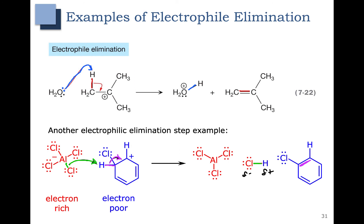As you go through the electrophile elimination reaction, make sure you can properly distinguish it from an E2 reaction, which uses a base, releases a leaving group, and forms a carbon-carbon double bond. You also want to distinguish it from a nucleophile elimination, where we form a carbon-oxygen or carbon-nitrogen double bond. In electrophile elimination we form a carbon-carbon double bond — that's how it differs from a nucleophile elimination.